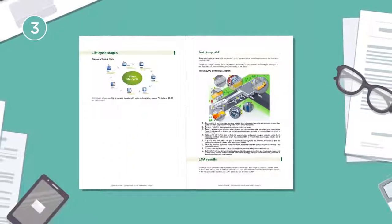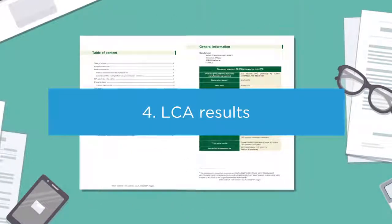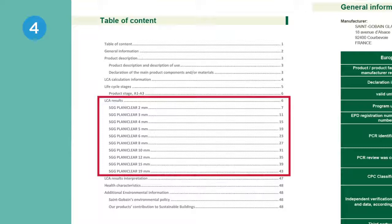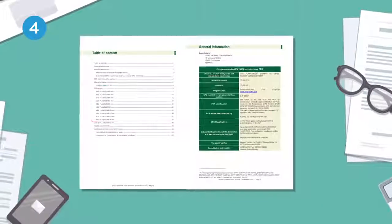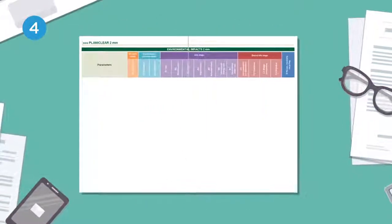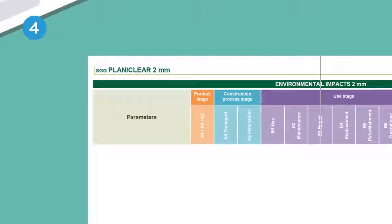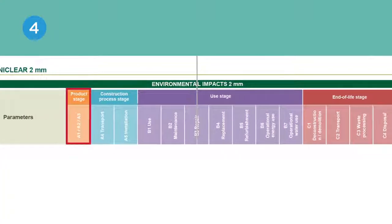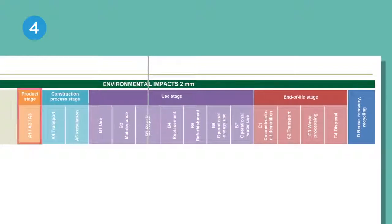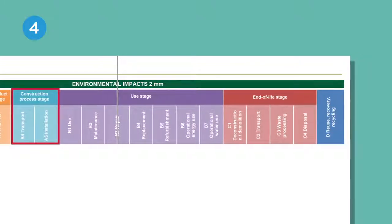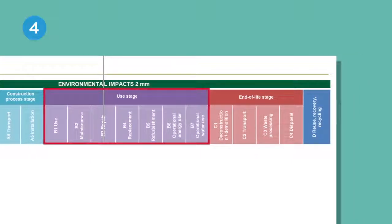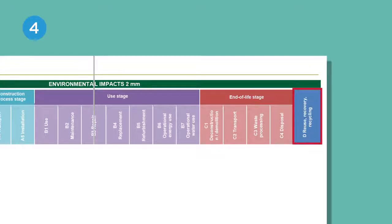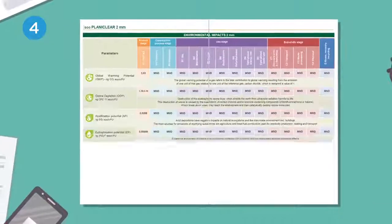Four: LCA results. An EPD can present LCAs for more than one product — you'll find a full list in the contents. Here the EPD applies to the Planibel Clear thickness as mentioned. LCA results are presented in table format. In the top left is the product name. There is a column for each life cycle stage defined by the standard: orange from raw materials to manufacture in our factories; turquoise, the construction process stage; purple, the use stage.